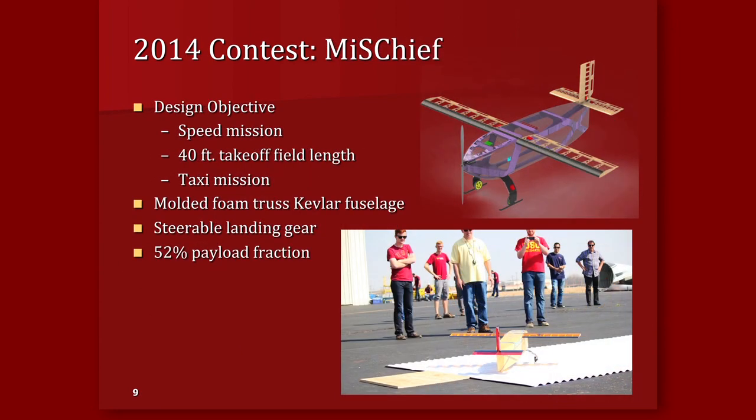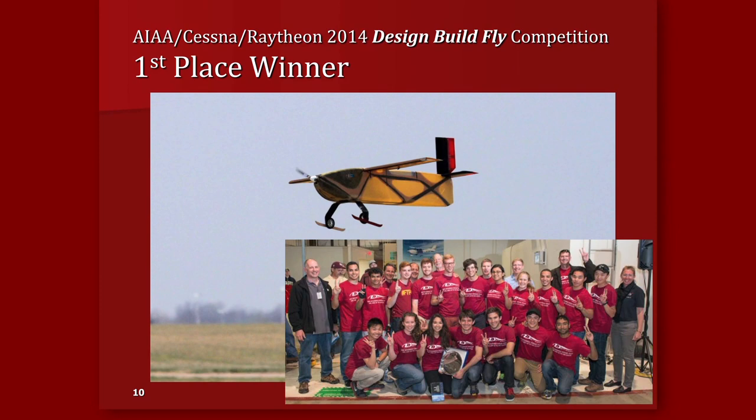Our 2014 entrant was Mischief. This plane also had a 40-foot takeoff field length. The interesting mission that year was a taxi mission where we had to navigate a series of obstacles while traveling on corrugated roofing panel, accomplished using carbon skids on a bow gear. What made this plane so competitive was that it was very lightweight — highlights include the steerable landing gear, which weighed less than 20 grams, and a Kevlar fuselage with a foam truss to transfer landing and in-flight loads. It actually won first place in 2014.